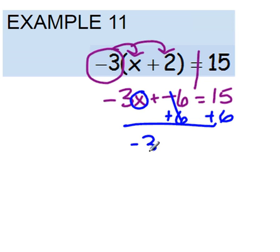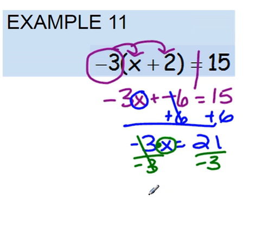That will leave us with negative 3x equals 21. Remember that we are solving for this x, we need to get this negative 3 away. It's multiplying, so we're going to divide, and that will leave us with x equals negative 7.